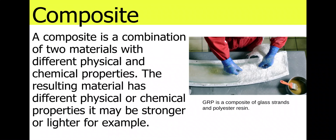Composite. A composite is a combination of two materials with different physical and chemical properties. The resulting material has different physical or chemical properties — so it might be stronger or lighter. An example is GRP, which is a composite of glass strands and polyester resin which, when mixed together, make a much stronger and very lightweight product.